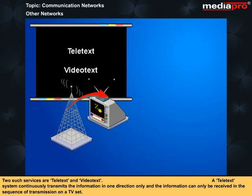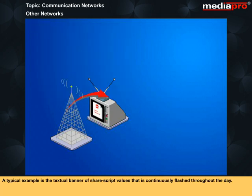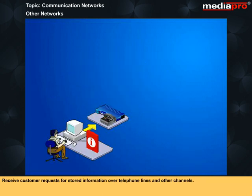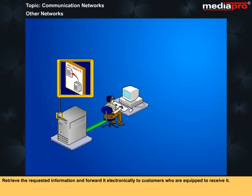Two such services are Teletext and Videotext. A Teletext system continuously transmits information in one direction only, and the information can only be received in the sequence of transmission on a TV set — a typical example is the textual banner of share script values scrolling throughout the day. A Videotext system is interactive, rich in graphics, and more advanced. It stores a vast amount of graphic and alphanumeric information at a central computer facility, receives customer requests for stored information over telephone lines, and retrieves and forwards the requested information electronically to customers.